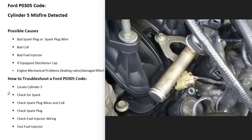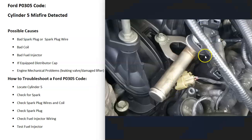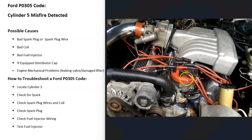If you're getting spark and there are no issues there, the next thing to check is the fuel injector and the fuel injector wiring. Examine the fuel injector wiring on cylinder number five and be sure it all looks good. You can run some tests on it — there are good YouTube videos on that — and you can also test the fuel injector itself. Some mechanics will swap it out with the one next to it and see if the problem follows, just to verify it's a bad injector.